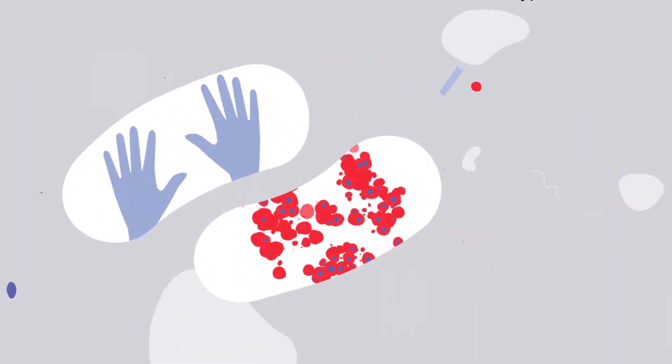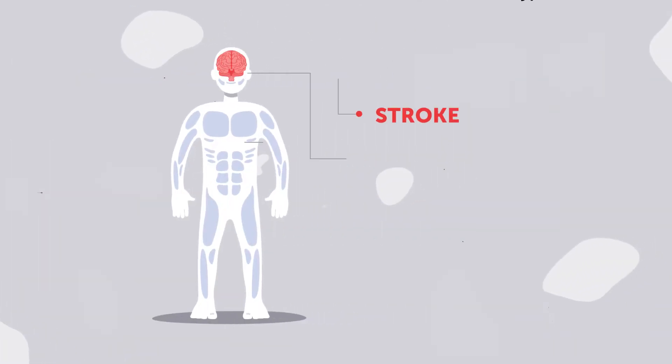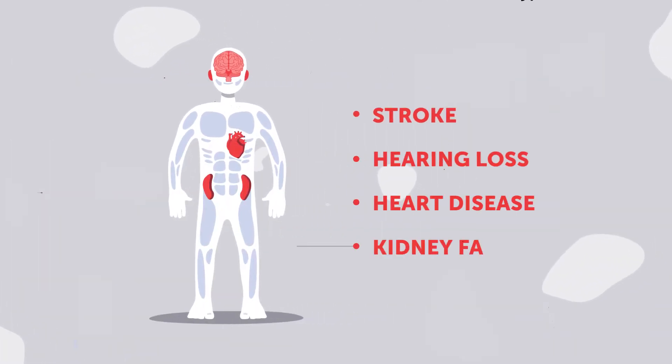Childhood symptoms include pain in the extremities and a skin rash, and with adulthood, stroke, hearing loss, heart disease, and kidney failure.